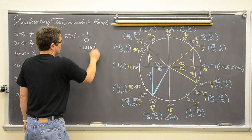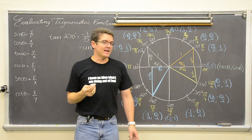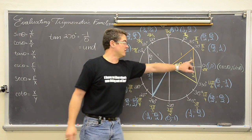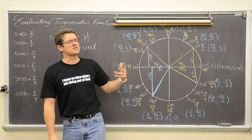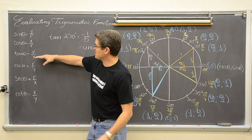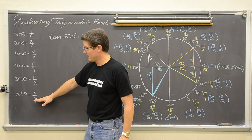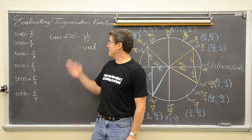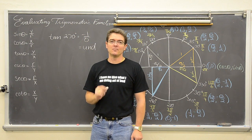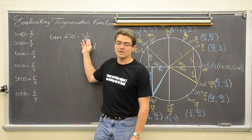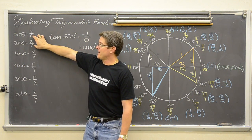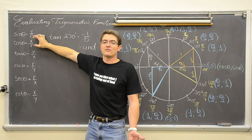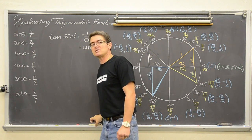When we go to graphing trig functions, these undefined values are going to be where you get your vertical asymptotes — but we are not there yet. Sine and cosine will never become undefined because they have denominators of r, and a circle cannot have a radius of zero; otherwise it is just a point.